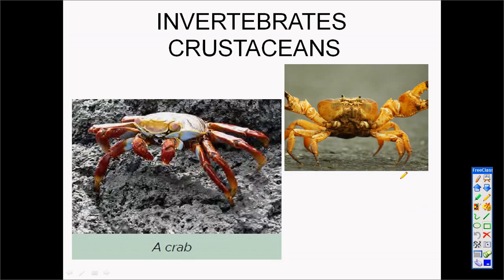A nice and interesting thing about crabs is that they are able to breathe on land. Although they breathe with gills like a fish, they have a chamber where they store some water. While they are moving on land to feed on dead fish or prey, they use the stored water and the oxygen in it to breathe. When the oxygen becomes less, they go back into the water, refill the chambers, and then they are able to move on land again.